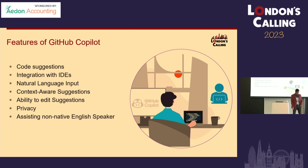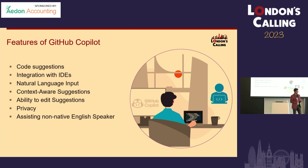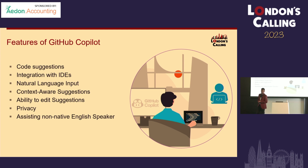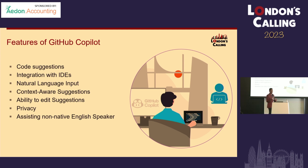Let's look at the features of GitHub Copilot. It provides code suggestions — it's trained within machine learning algorithms, reads your context, and gives you code suggestions. It's well integrated with your IDEs like Visual Studio Code, and also other IDEs like NetBeans. It's also able to do natural language input — you can write your things in plain English descriptions, and Copilot is intelligent enough to read your description and provide a suggestion.